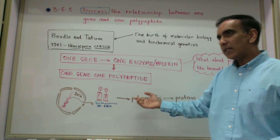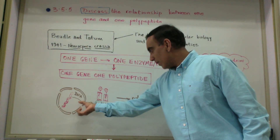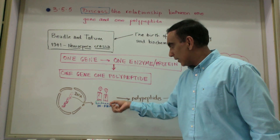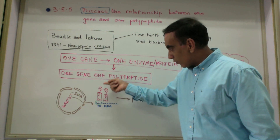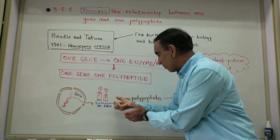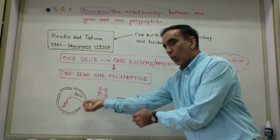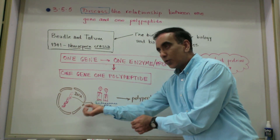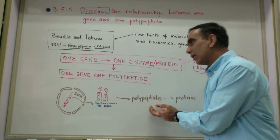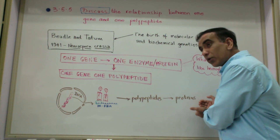The one gene one polypeptide hypothesis was built on the idea that DNA would be replicated, messenger RNA would enter the cytoplasm, and then transfer RNA would bring amino acids to assemble a polypeptide. In this way, one gene would give rise to one polypeptide, which in turn would eventually give rise to proteins.